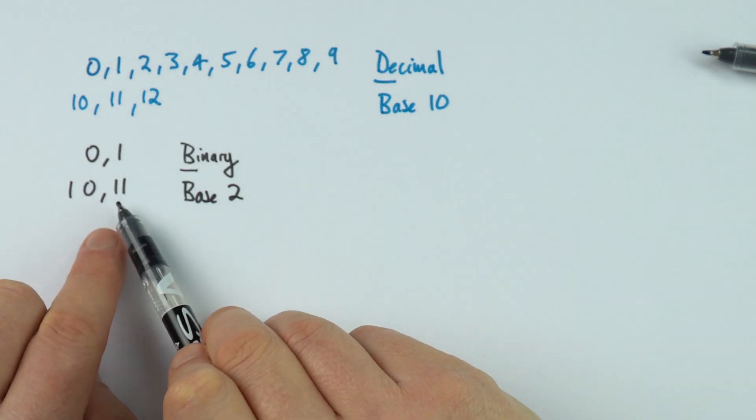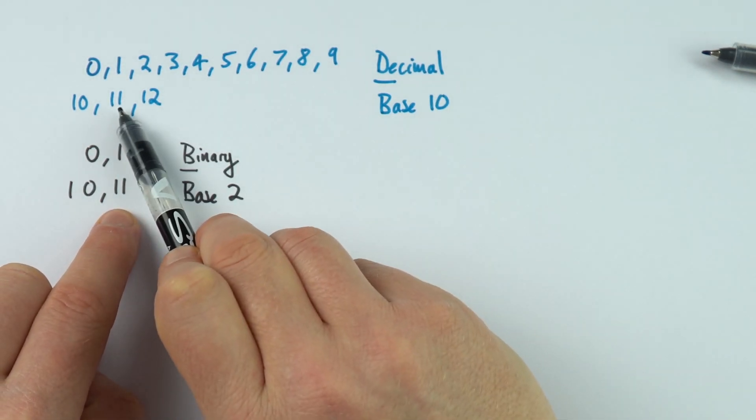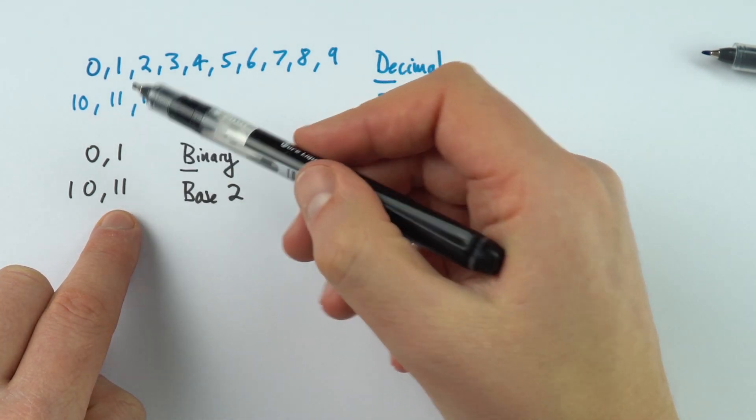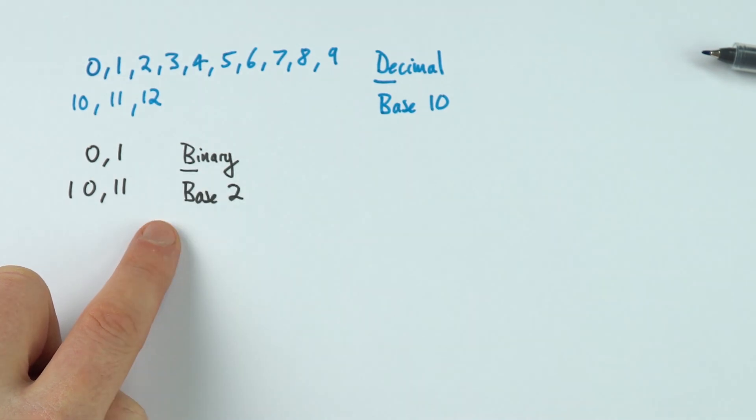And I must say that this number here, 11, is different to this number here, 11. They represent different numbers. They look like they're written down the same, but we've got a different base, and therefore they're different numbers.